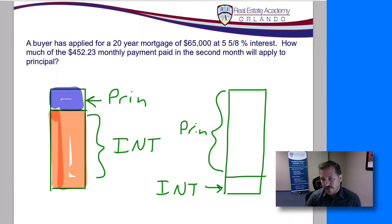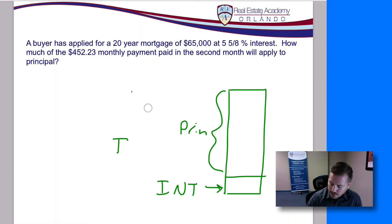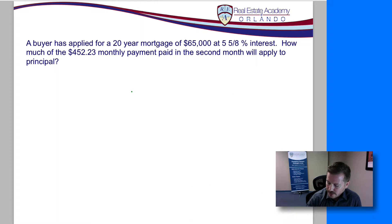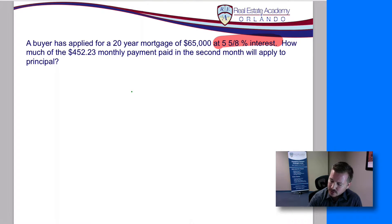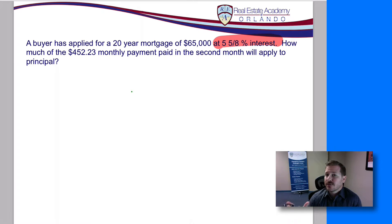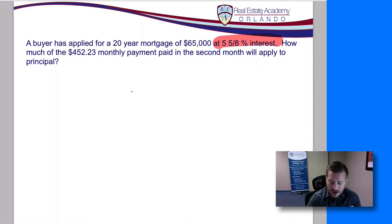So now let's take a look at how we actually solve this problem. The first thing we need is three pieces of information: the term, the interest rate, and the monthly payment — and they give us all of that in the question. However, when it comes to the interest rate, they give it to us as a percentage — five and five eighths percent. We need to transfer this from a percentage into a decimal so we can use it in our calculator.